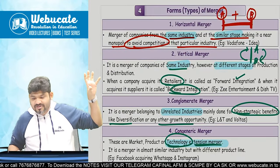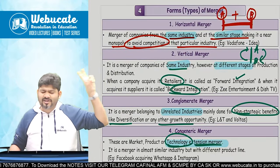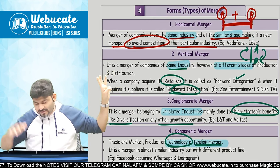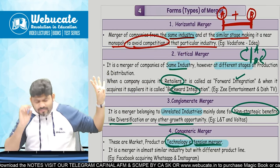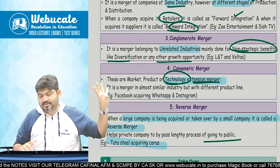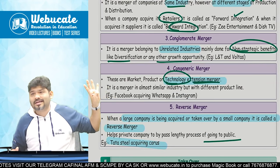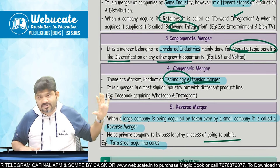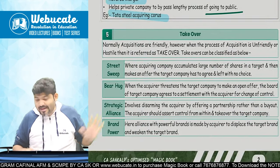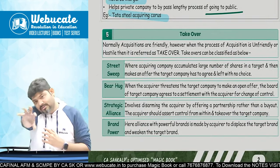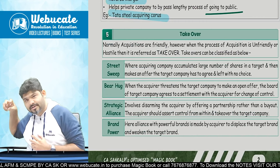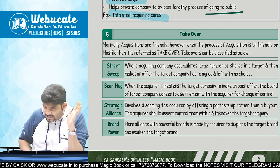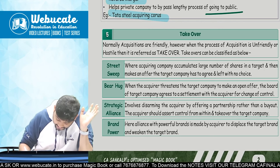So the types of merger are: horizontal merger, vertical merger, co-generic merger, conglomerate merger, and reverse merger. Then comes the takeover. Takeover means acquiring a company. First type is called a street sweep — the acquiring company accumulates a large number of shares and then makes an offer. The other company has no option but to accept. This is what happened in the case of NDTV acquisition by Adani — Adani acquired more than 40% shares in NDTV and NDTV had no choice.